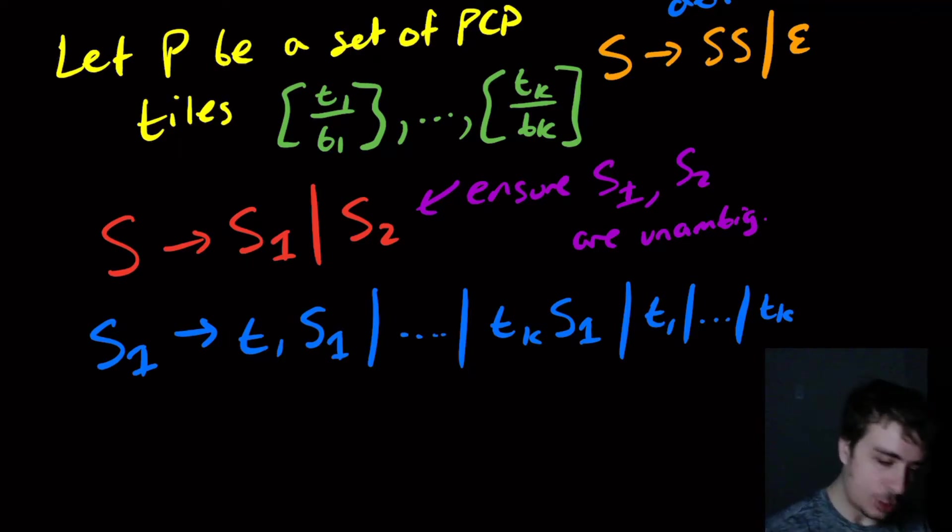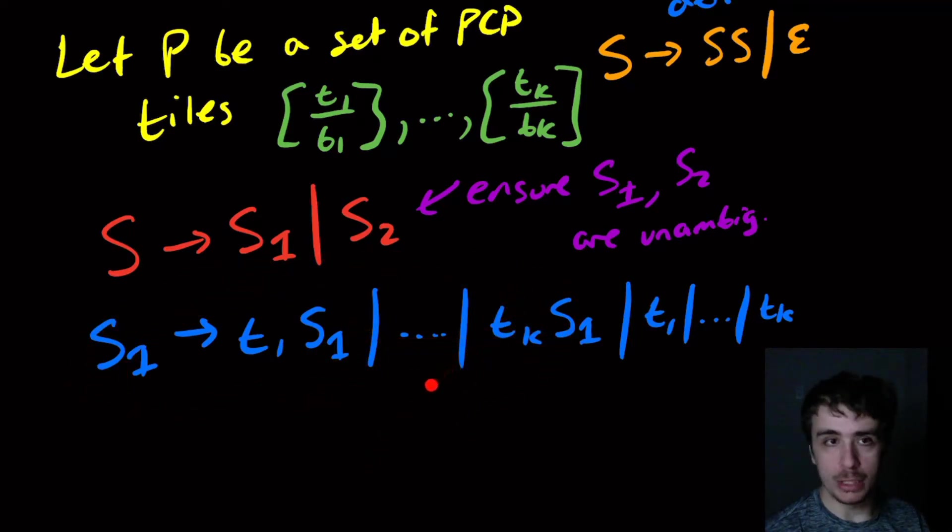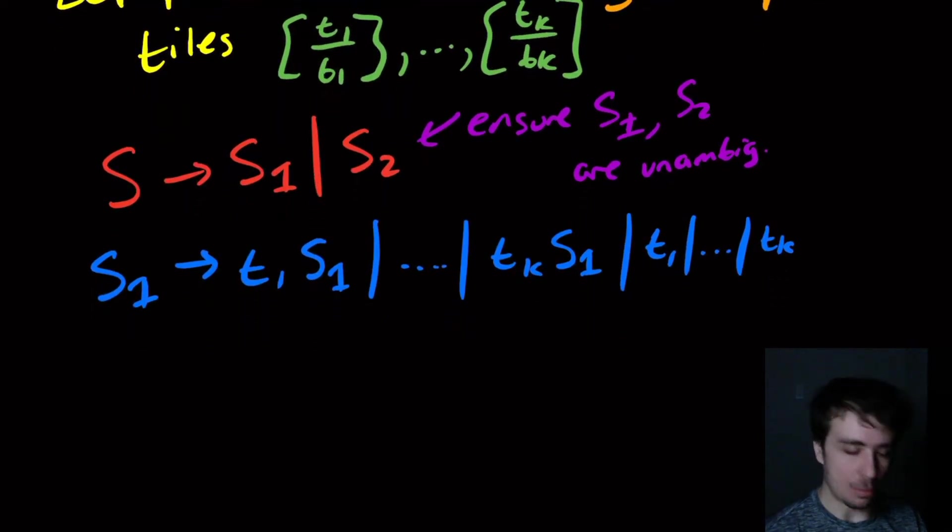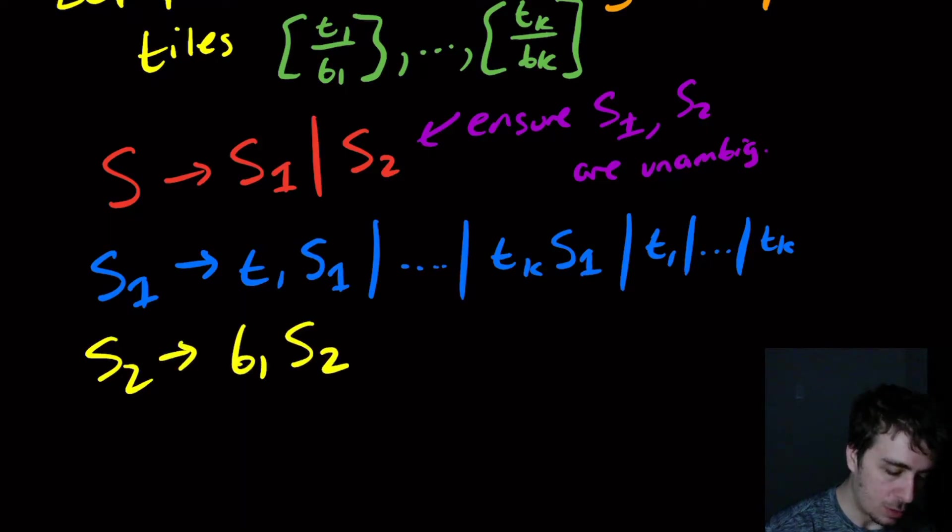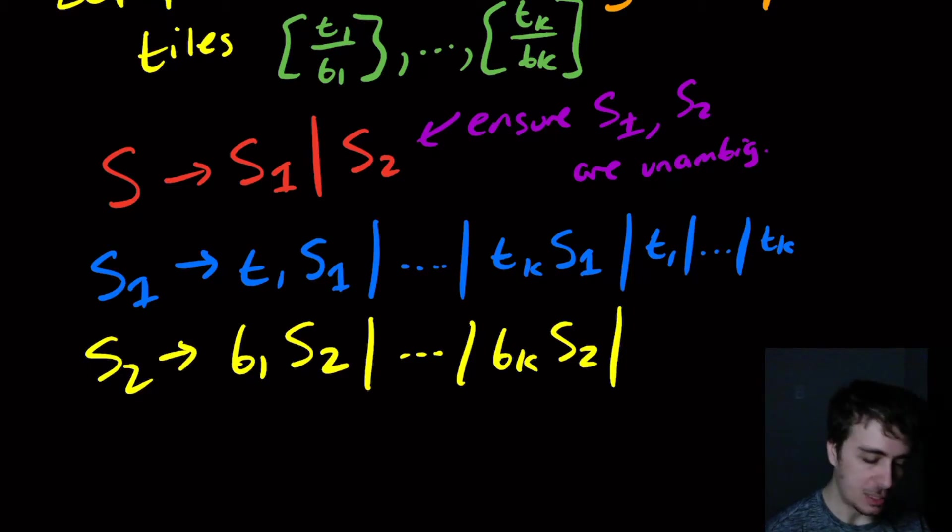It could be that it just chooses t1 and then S1, so it chooses the first tile, and it's allowed to go back through and choose more tiles if it wants to. It's never going to transfer back to S or down to S2, so once you've picked S1 you're stuck there, which is exactly what we want. S2 is going to be very similar except for the bottom row: b1 S2 up to bk S2. We're stuck in the S2 variable, and then we have b1 up to bk we can choose once the recursion is done.